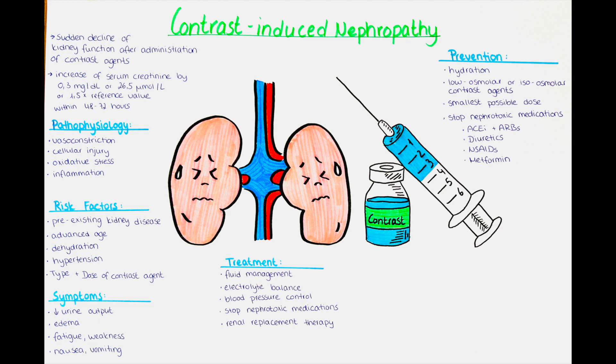This vasoconstriction reduces blood flow to the kidneys and impairs oxygen and nutrient delivery to the renal tissues. The reduced blood flow can lead to ischemia, meaning lack of blood supply, and cellular injury.